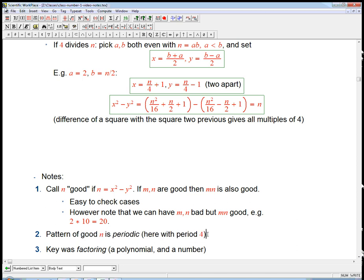The other thing to note is that the pattern of the good ends is periodic. Here it has period 4. That's going to be very interesting to look for in other cases. Will it happen always?